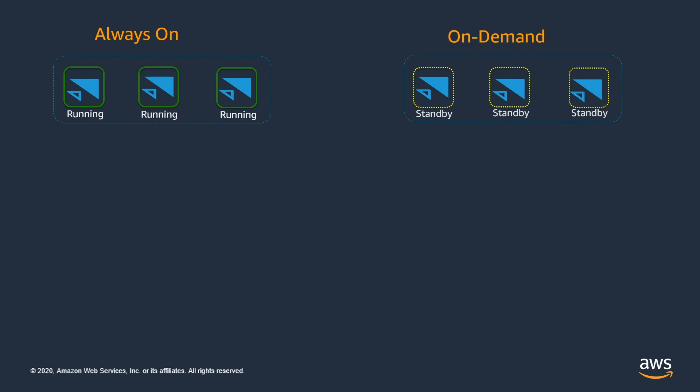The running instances, as you can see, have a green border around them. This is to indicate they are up and running and readily available for the user connection. Whereas the standby instances have a dotted yellow border to indicate they are not ready for the user session. This coloring is just to easily differentiate between a running instance and a standby instance for this demo. Now let's see how the connection experience varies between two users — one connecting to always-on fleet and the other connecting to on-demand fleet.